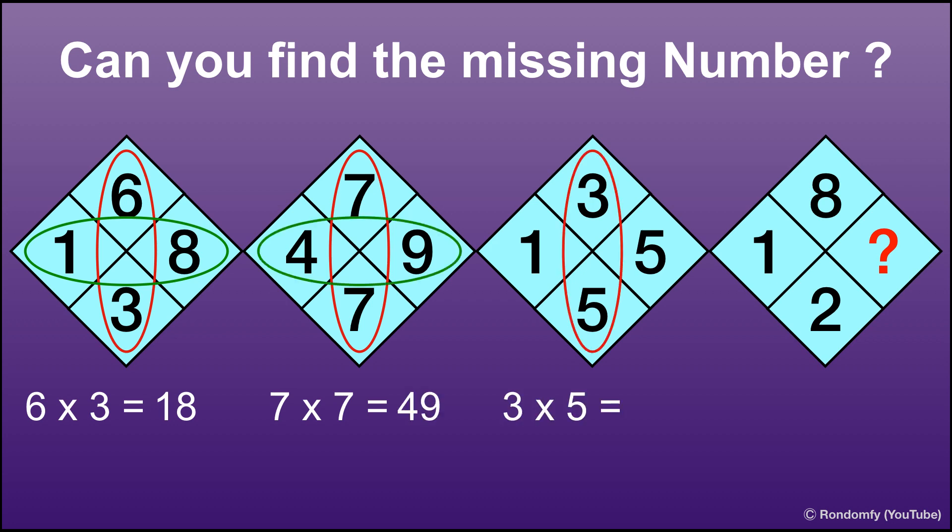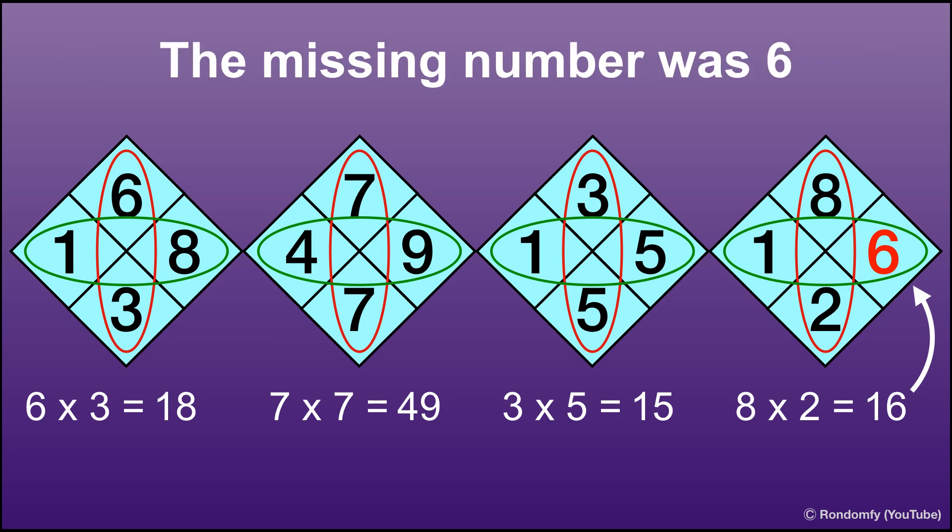Same pattern in this one. For the last rhombus, 8 into 2 equals 16. So the missing number was 6.